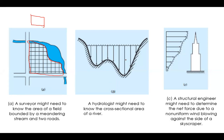The second example: a water resource or hydrology engineer needs to find the cross-sectional area of a river. This is the profile of the river's cross-section, and we need to find that area. A third example: a structural engineer analyzing tall structures must deal with wind pressure, which increases with height in a very irregular manner.